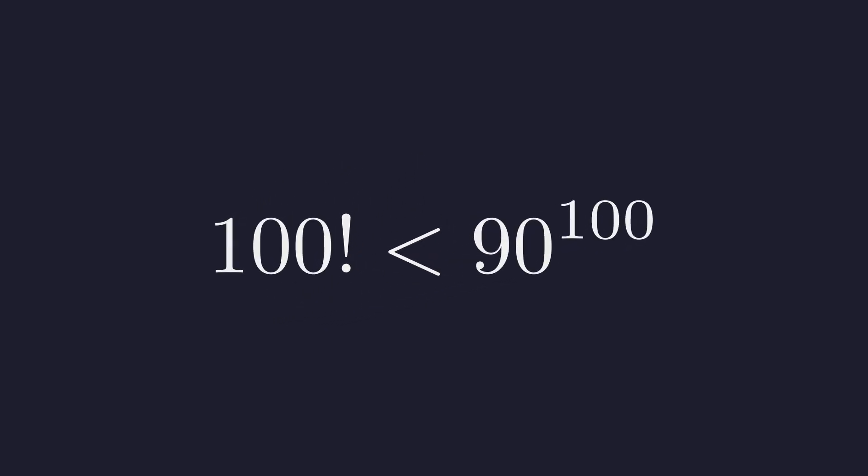Now, let's translate this back to our original problem. We have proven that our original ratio is less than 1. Multiplying both sides by 90 to the power of 100 gives us the final answer. And so 90 to the power of 100 is the larger number.